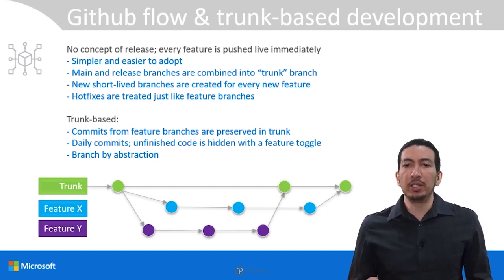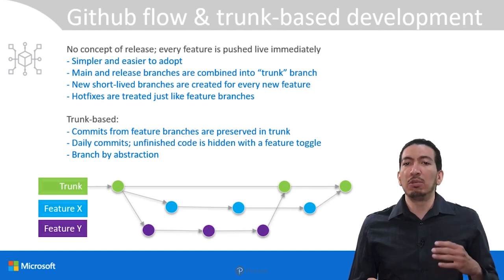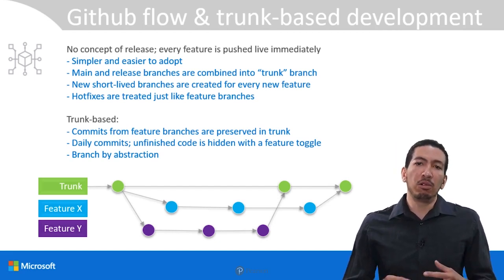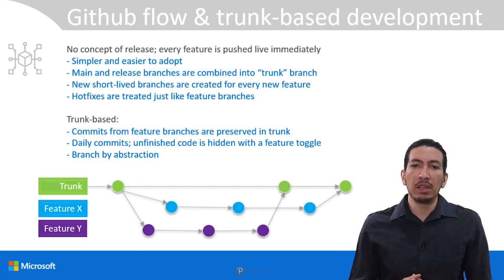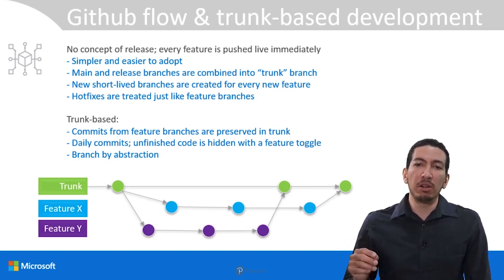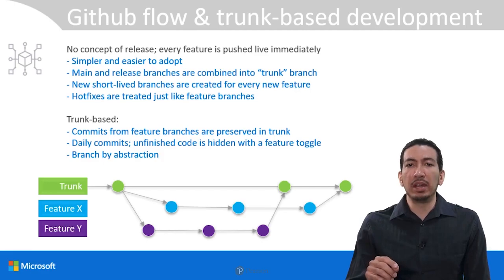The main difference between GitFlow and trunk-based development is that in trunk-based development, you will commit your work on a daily basis, whether you have finished your work or not. If work is not ready, it will be hidden behind a feature toggle. In the graphic, you can see that we have many feature branches which are merged into just one branch — the trunk branch. Whenever a new feature or hotfix is required, a new branch will be created as well.